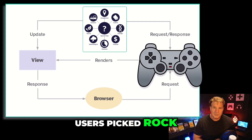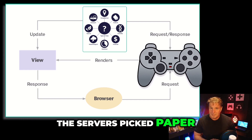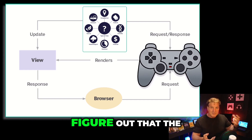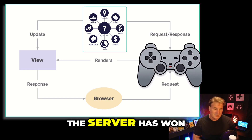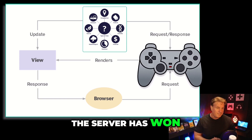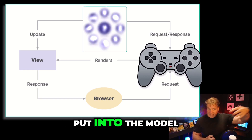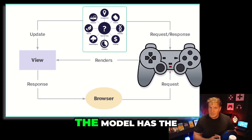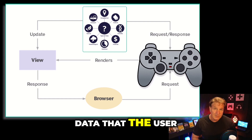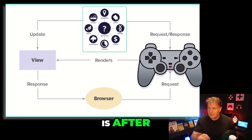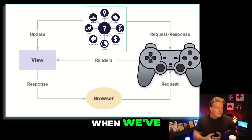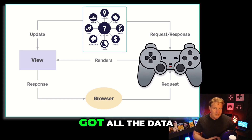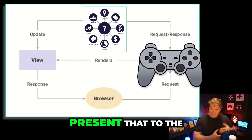For example, maybe we're playing a rock-paper-scissors game and the user has picked rock, the server has picked paper — we have to figure out that the client has lost and the server has won. That result we would put into the model. The model holds the data that the user is after.